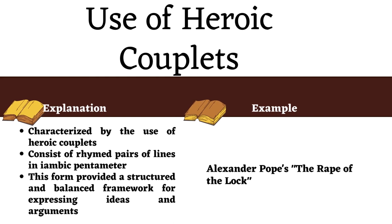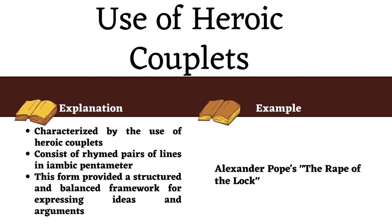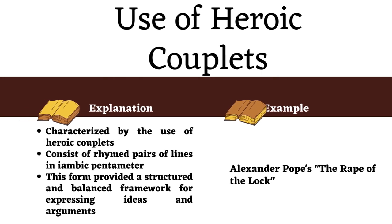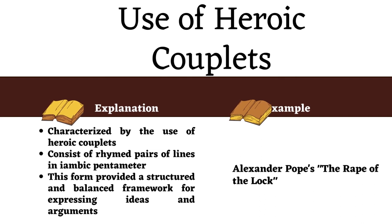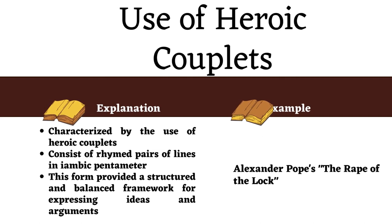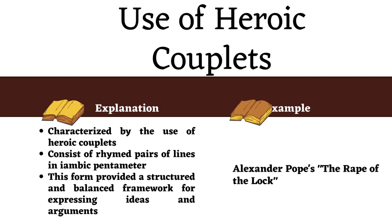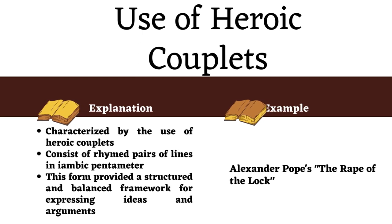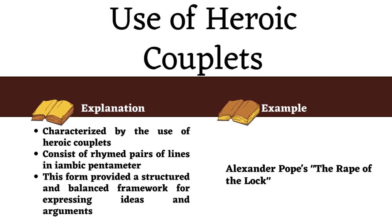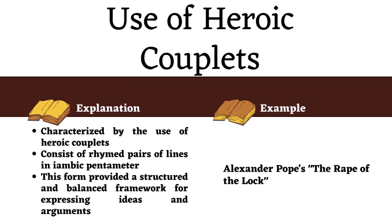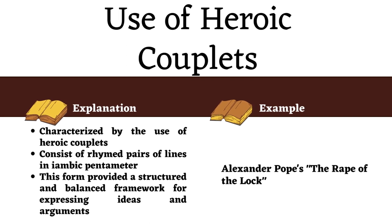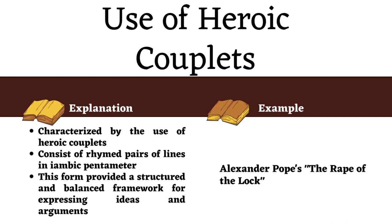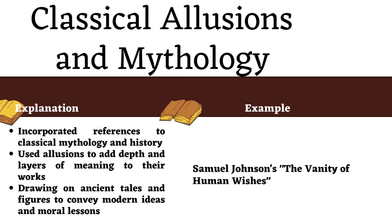Use of heroic couplets: a distinctive feature of neoclassical poetry was the use of heroic couplets, which consist of rhymed pairs of lines in iambic pentameter. This structured form of verse, exemplified in Alexander Pope's The Rape of the Lock, provided a balanced framework for expressing ideas and arguments. It is written in heroic couplets and exemplifies the neoclassical style, employing this meter to satirize the trivial social issue of a lock of hair.